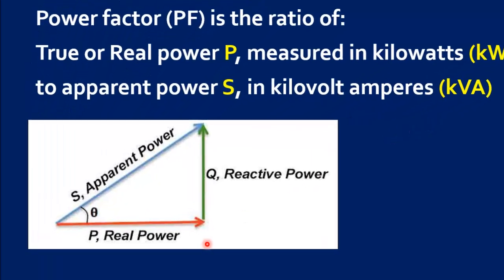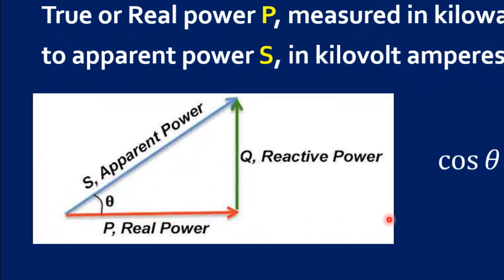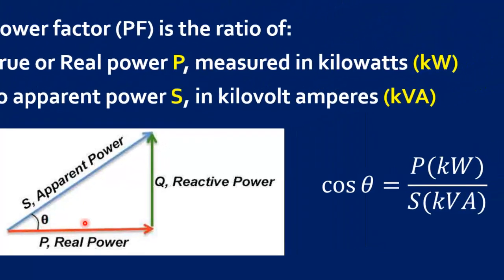Here you can see this is very common power triangle. Base of triangle represents true power. The hypotenuse represents apparent power. This is angle theta. Power factor is represented by cos theta. If we take cos theta of the triangle, it is equal to true power P, divide by apparent power S.